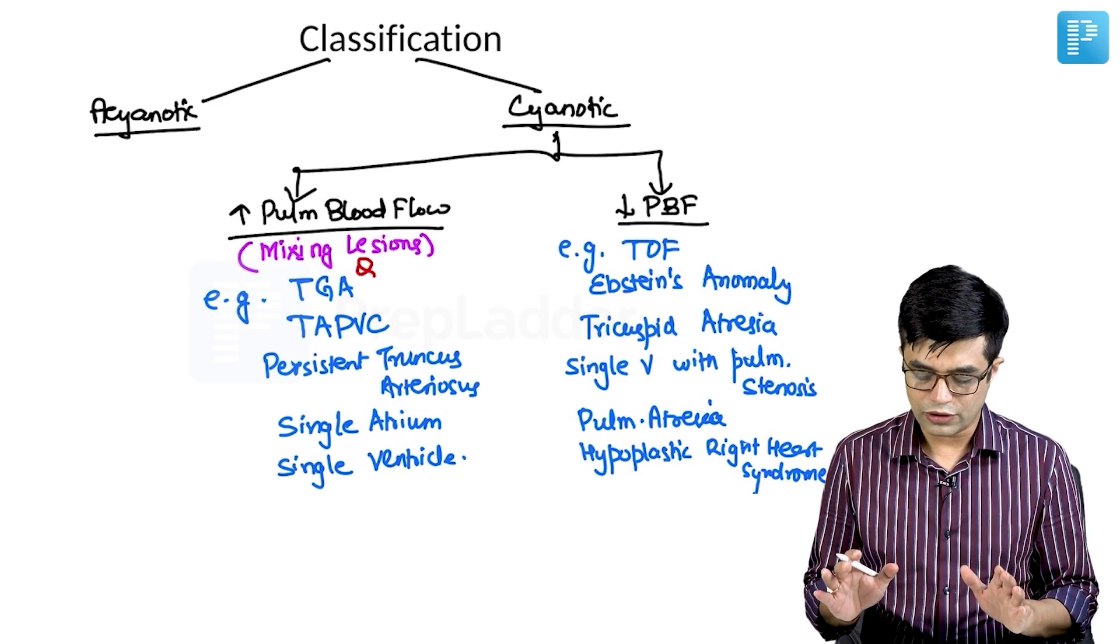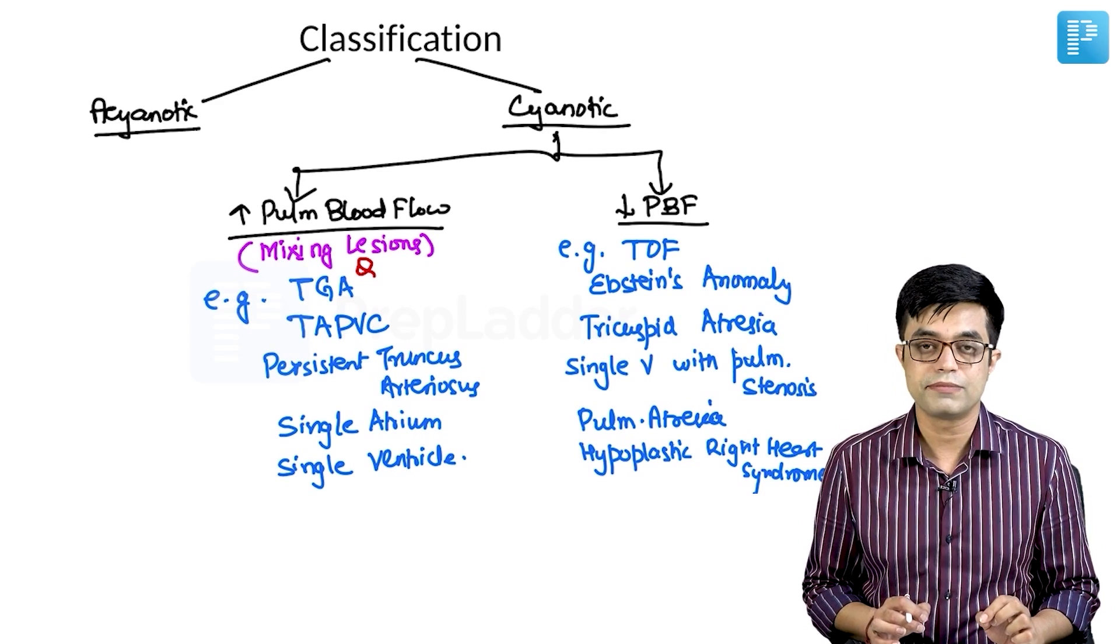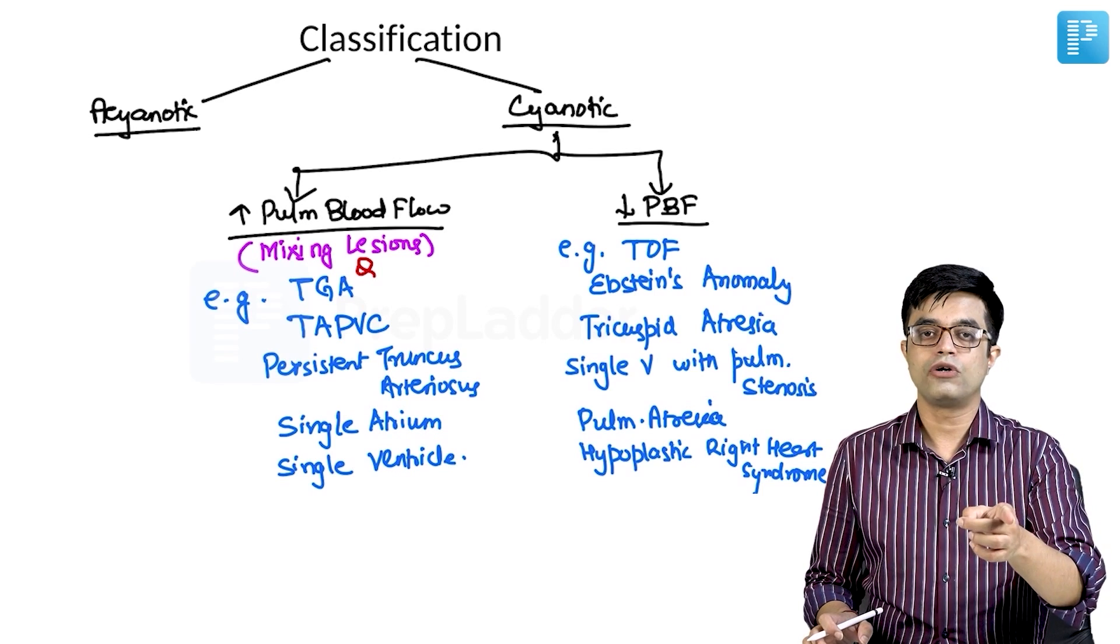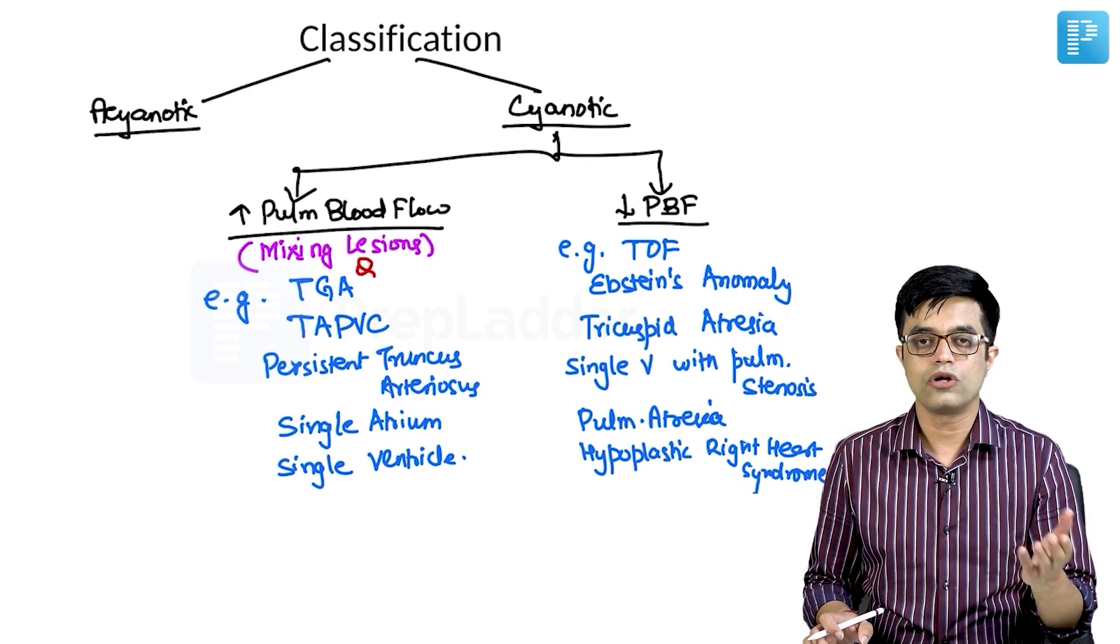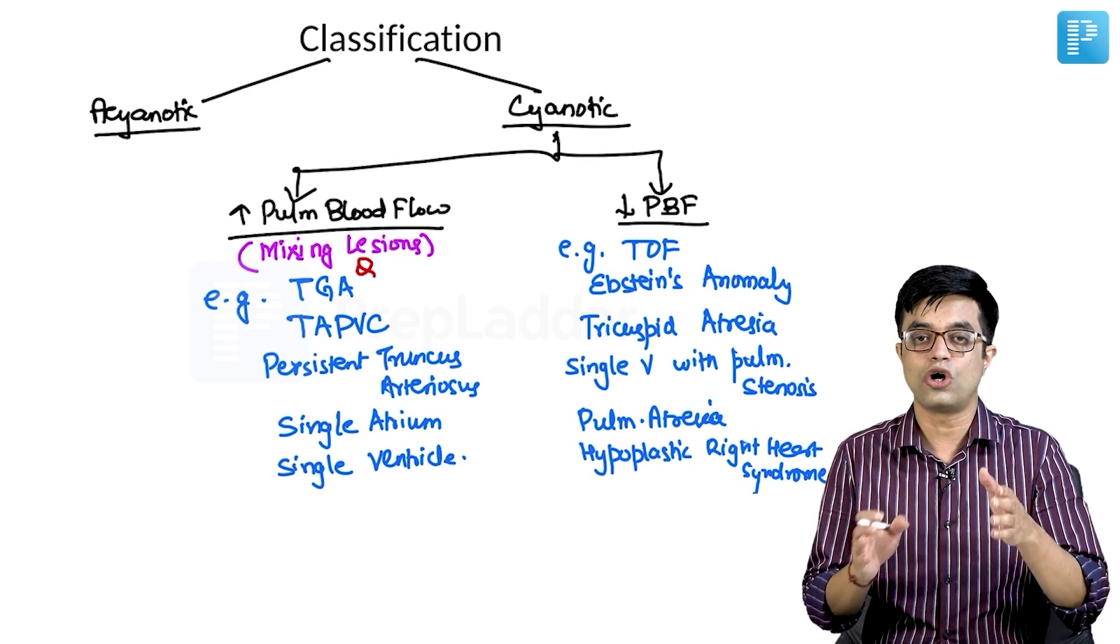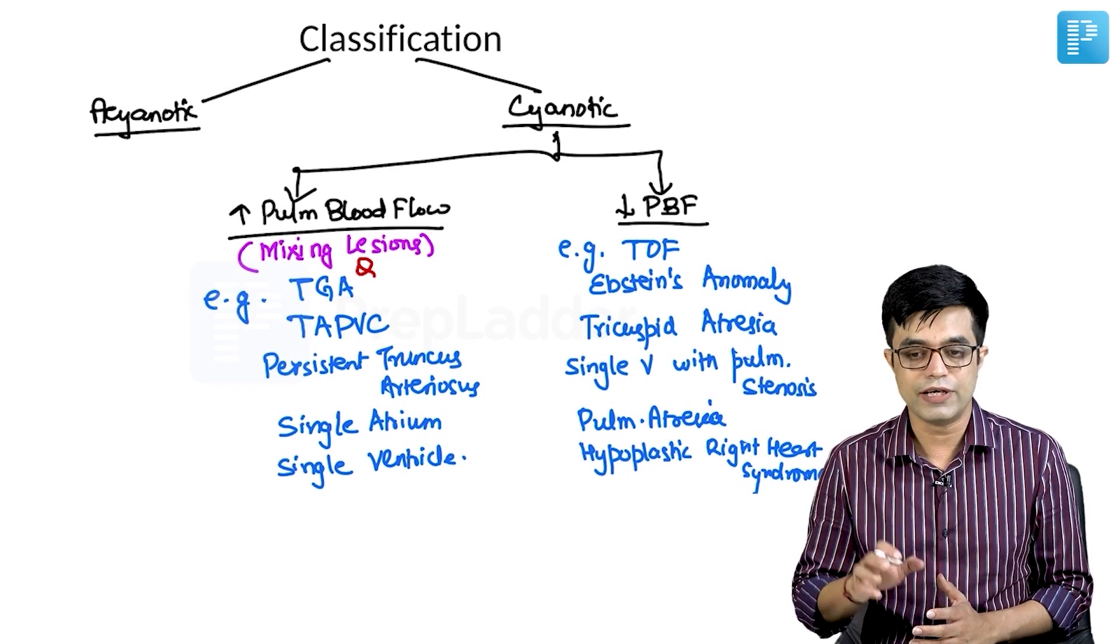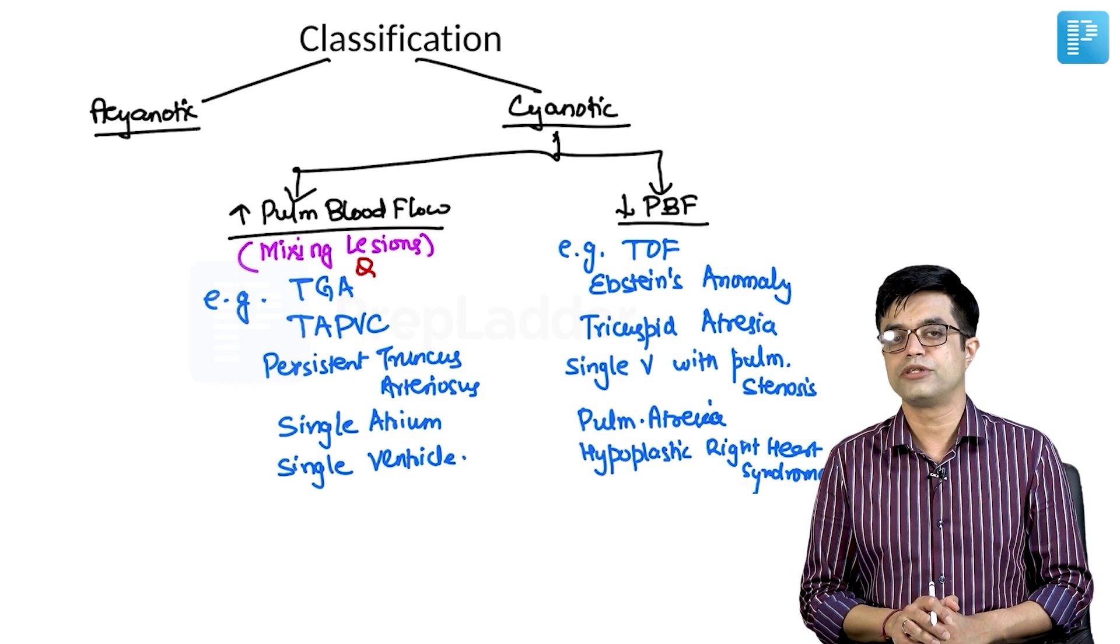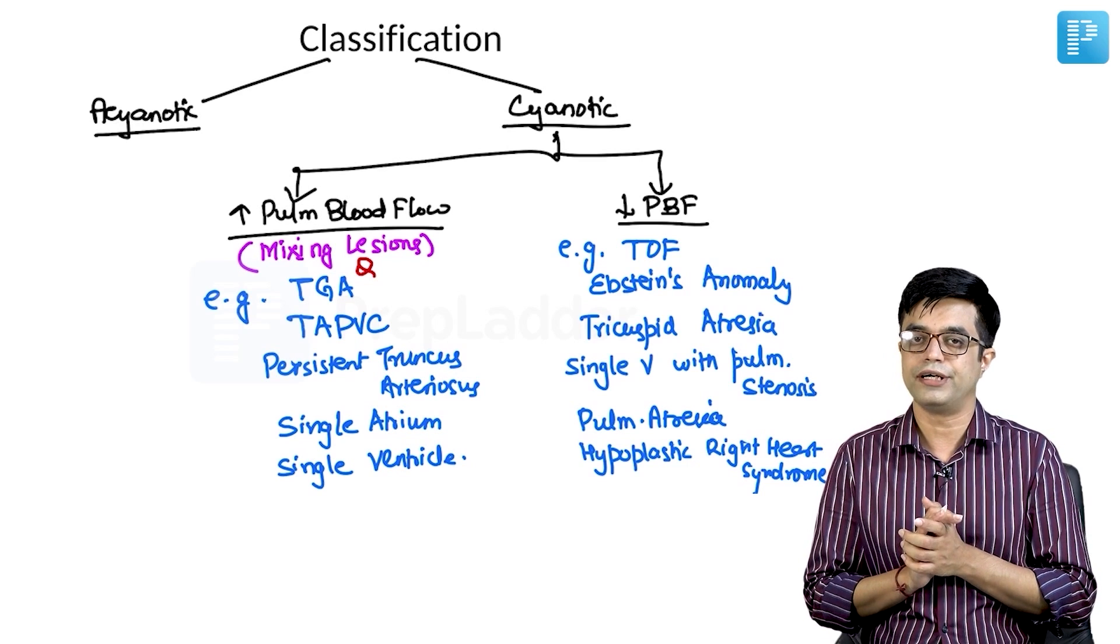So this is the overall classification that you need to remember. How MCQs can be asked in super specialty exam? They will ask you: all of the following are cyanotic with increased pulmonary blood flow except, all of the following are acyanotic with normal pulmonary blood flow except. So this type of questions will check whether your hold over the classification is proper or not. This is the first thing - classification of congenital heart disease.